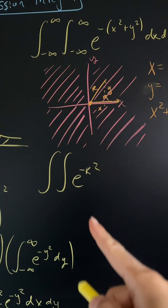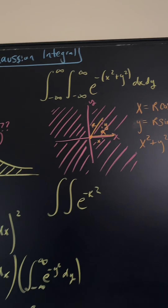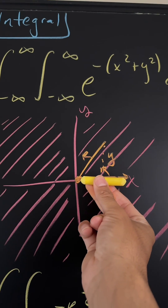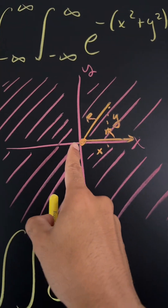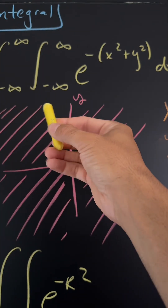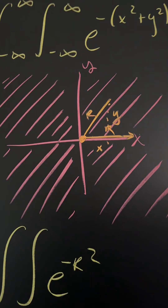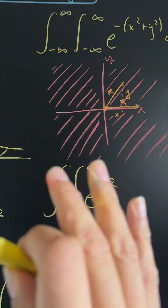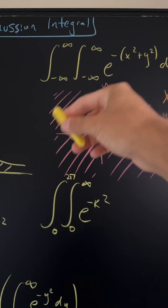Our double integral now becomes e to the negative r squared. We need to change our parameters. For r, since the radius needs to touch every single value on the xy plane, r goes from zero to infinity. For theta, we start at zero degrees and rotate to two pi. So r is from zero to infinity and theta is from zero to two pi, and rotating r through that full angle covers every single value on the xy plane.